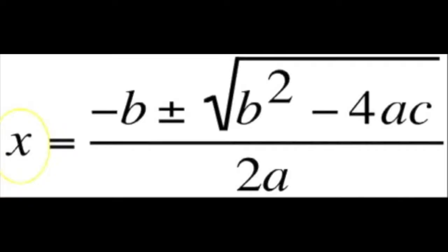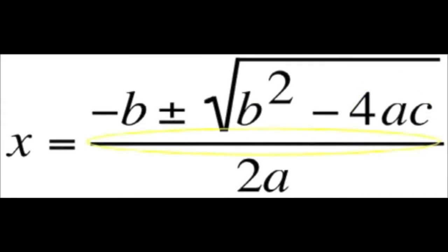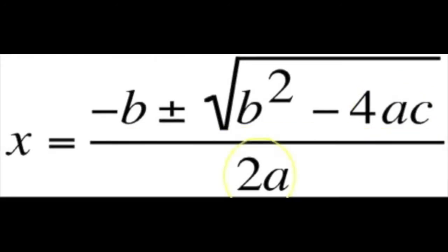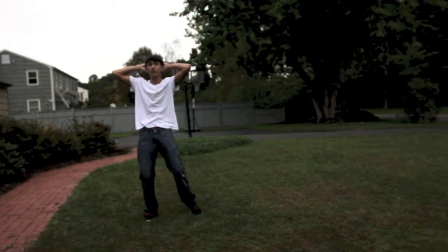x equals negative b plus or minus the square root of b squared minus 4ac. Then divide all of that by 2a. Now you know the quadratic formula.